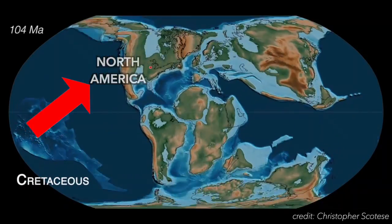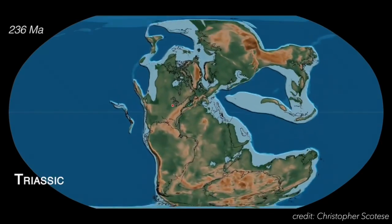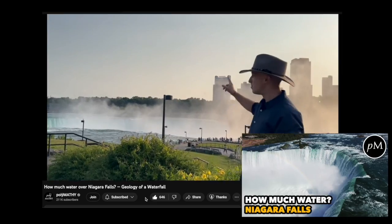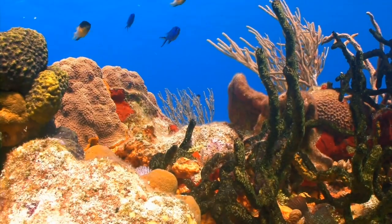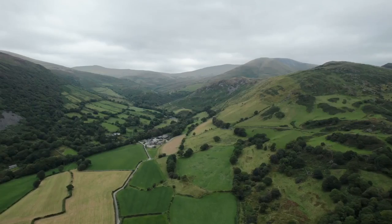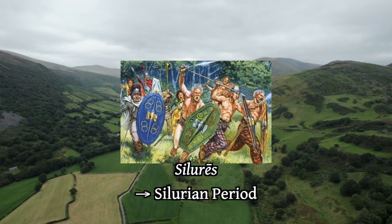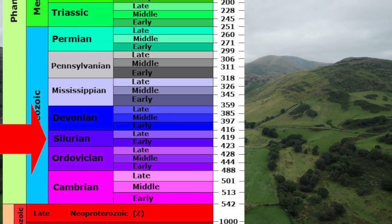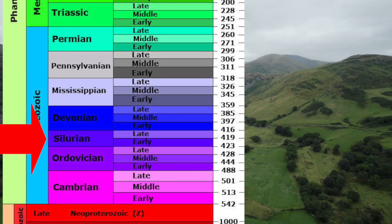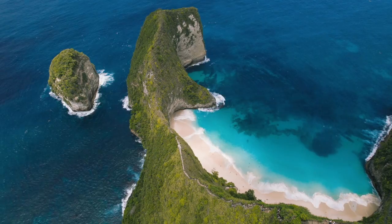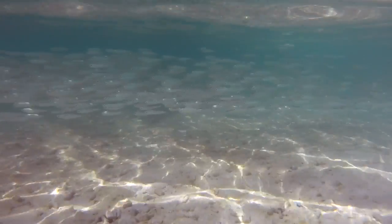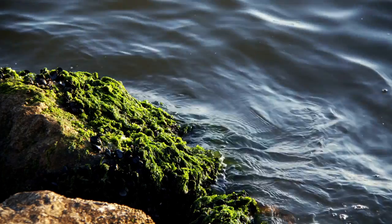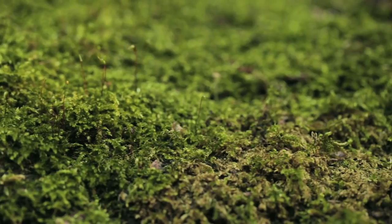What is today the continent of North America was once a very different place. It used to be the paleo-continent of Laurentia, and it was mostly underwater in the Silurian period — a name taken from Latin Silures, an ancient Celtic tribe of Wales. Extending from about 443 to 419 million years ago, the Silurian was typified by a warm and stable climate, making for high sea levels and numerous island chains. The Silurian period was when the first bony fish appeared in the oceans, and vascular plants — plants that carry food in their tissues — began to colonize the land.